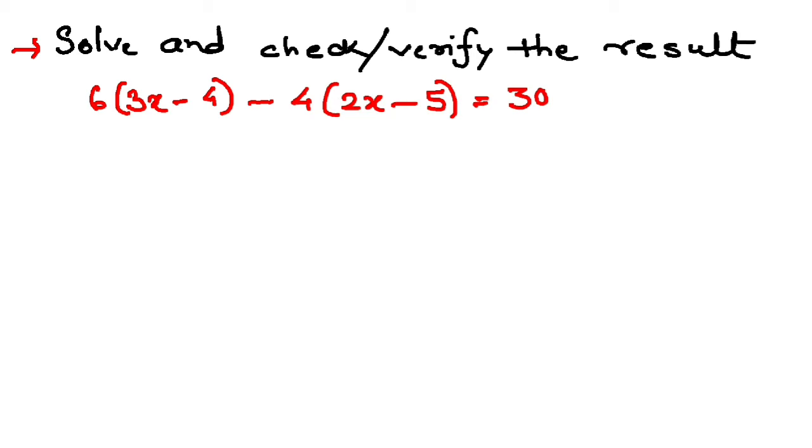Let us first solve this one, then we will see how to verify. So 6 into 3x is 18x, 6 into minus 4 is minus 24, minus 8x, and minus minus plus 20 equals 30.